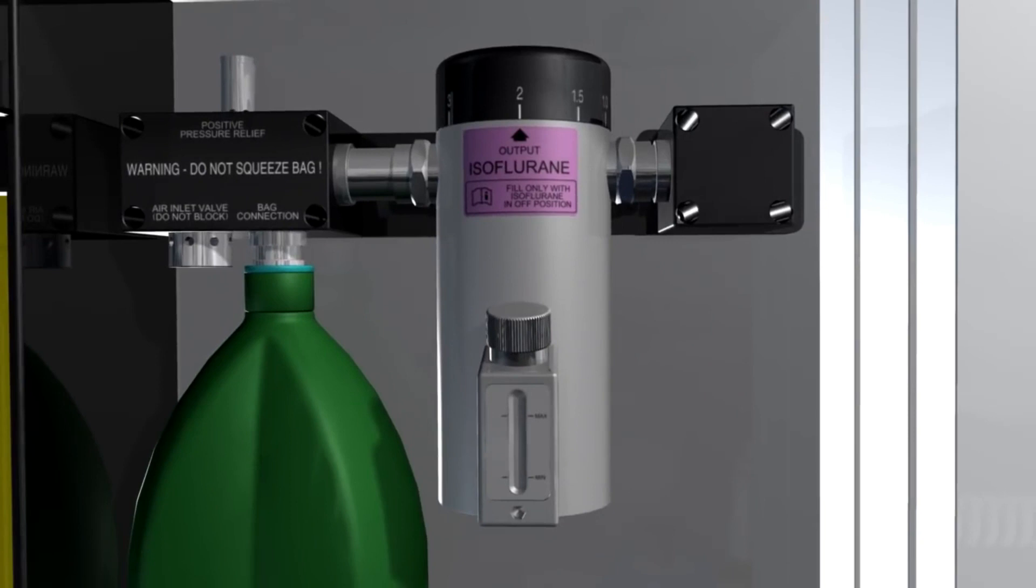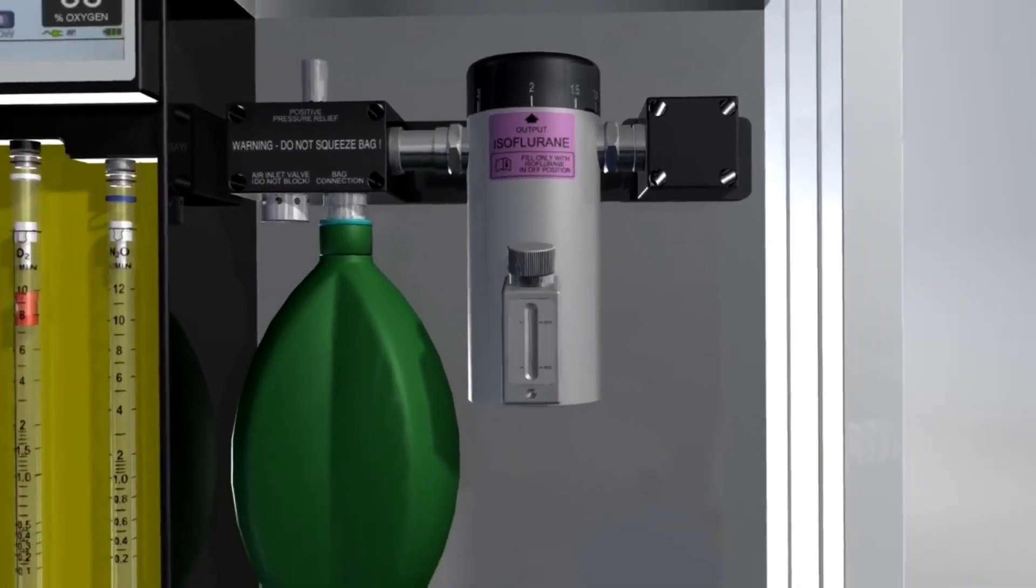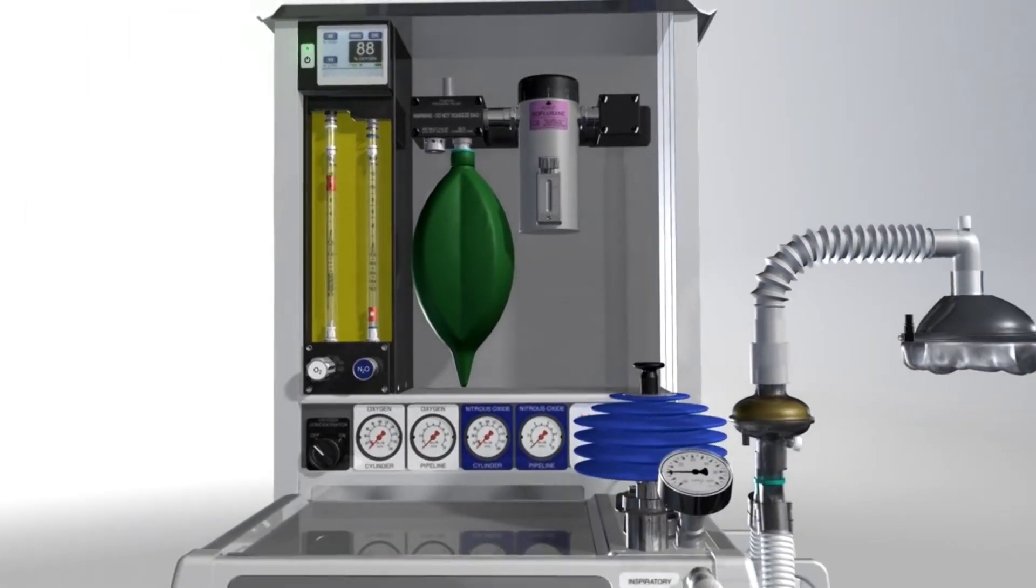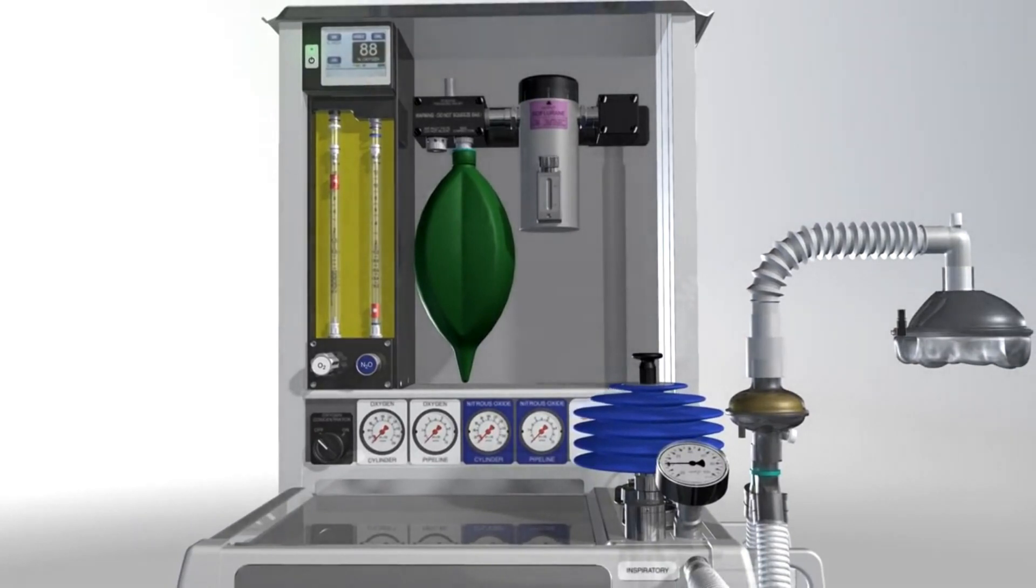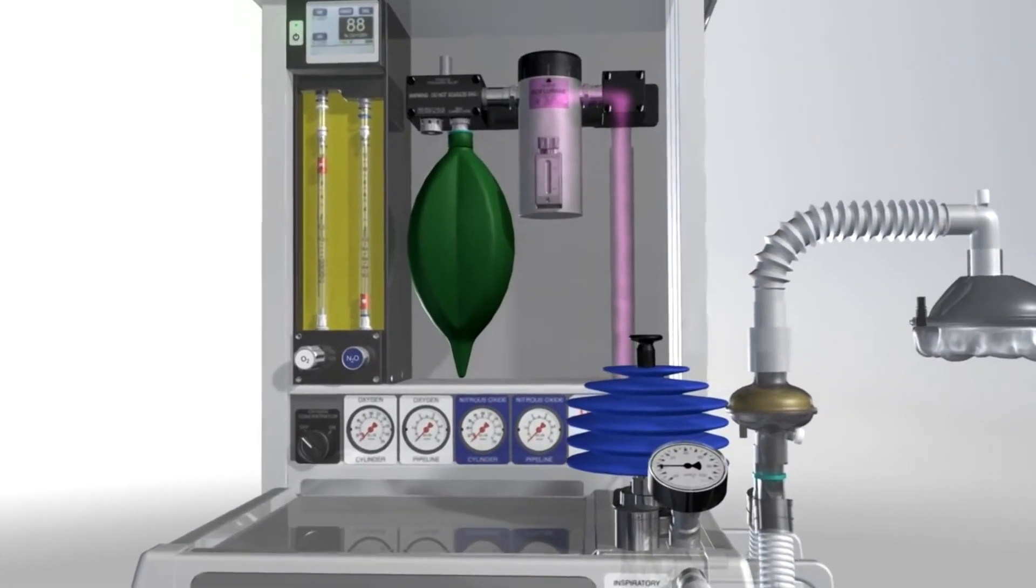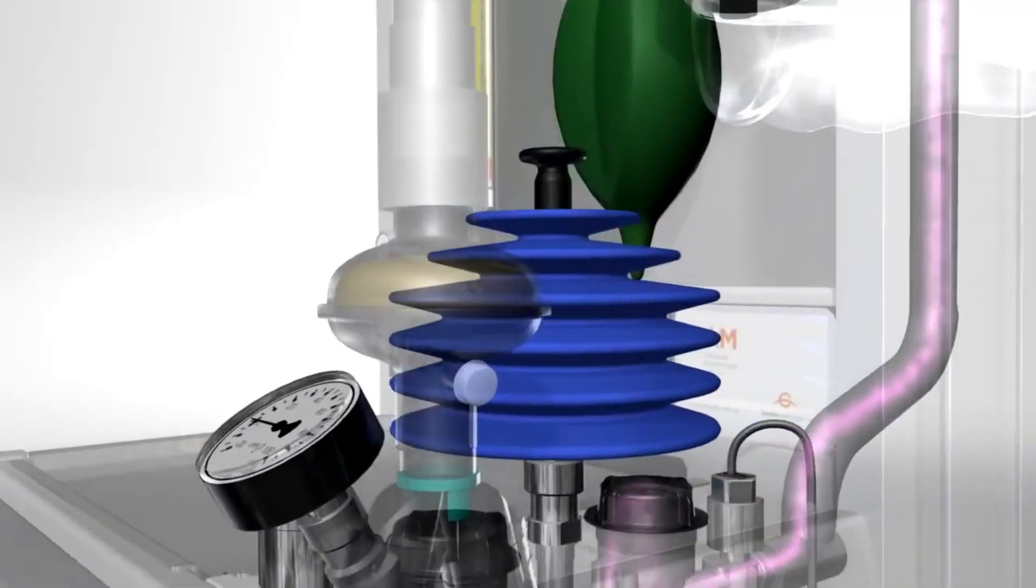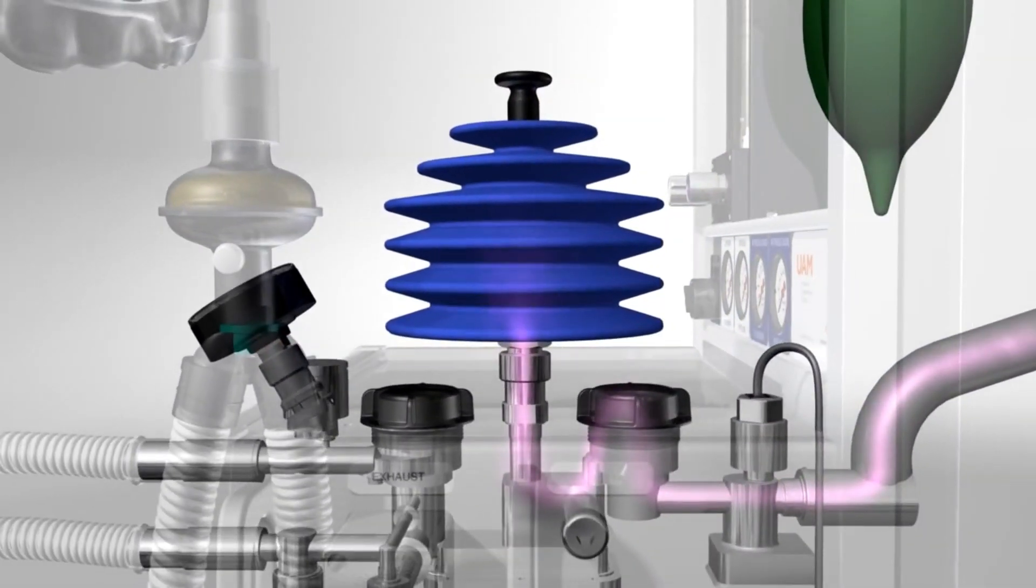The internal resistance of the vaporizer is usually high, but because the supply pressure is constant, the vaporizer can be accurately calibrated to deliver a precise concentration of volatile anesthetic vapor over a wide range of fresh gas flows.